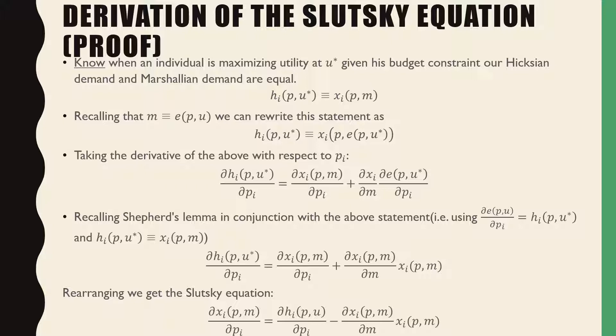Recalling that income M is equivalent to our expenditure function, we can just rewrite this statement as our Hicksian demand is equal to our Marshallian demand where our Marshallian demand is evaluated at prices and the expenditure function. So taking the derivative of the above equality with respect to the price of good I,